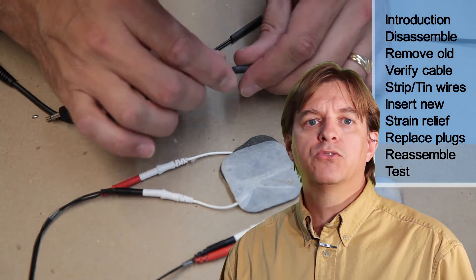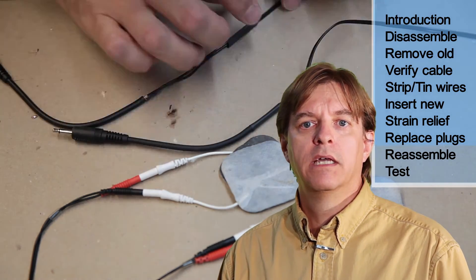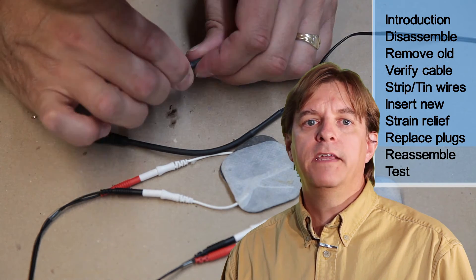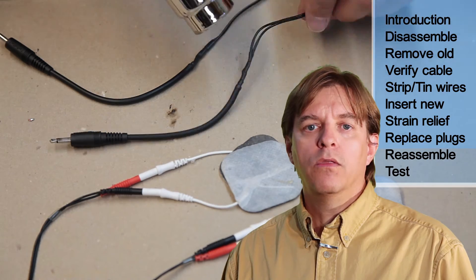Finally, slide the heat shrink over the connectors and heat it up to shrink it around the connection. In total, there were three pieces of heat shrink tubing for each cable. One for each of the wires and a larger one around the whole thing.